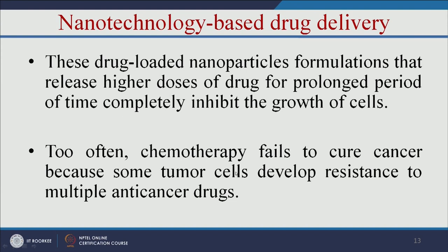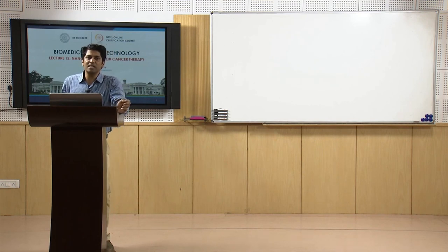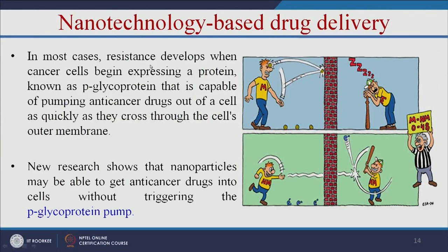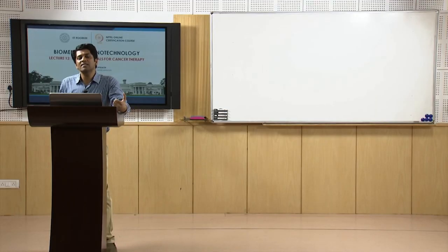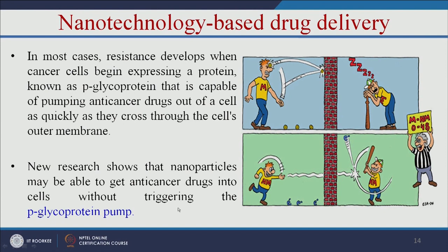Chemotherapy frequently fails due to the development of resistance to multiple anti-cancer drugs. Cancer cells become resistant by expressing a protein known as p-glycoprotein, which pumps anti-cancer drugs out of the cell as quickly as they cross the cell's outer membrane. When nanoparticles are used, they can deliver anti-cancer drugs into cells without triggering the p-glycoprotein pump — the nanocarrier escapes this pump, enters the cell, and releases the drug.